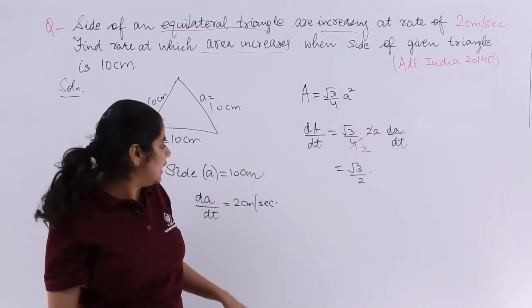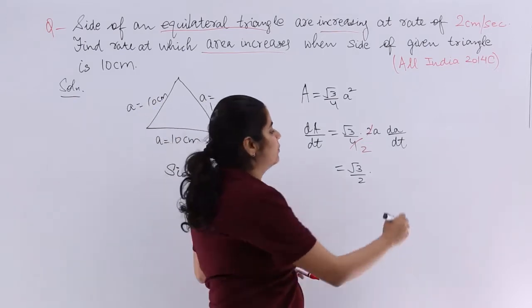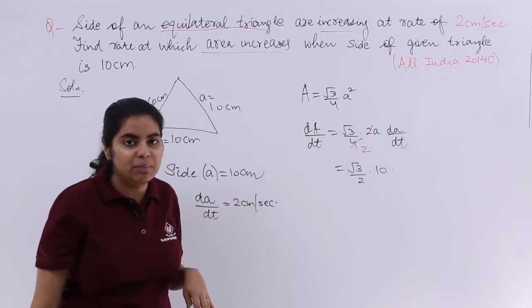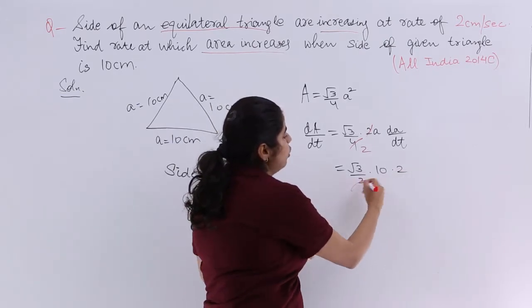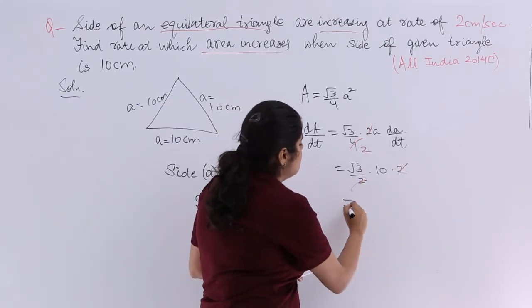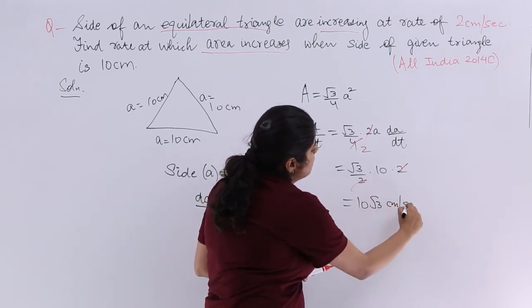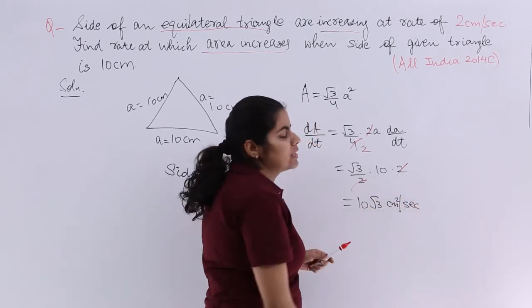Now what is a? a is the side that is 10 cm. Multiply da by dt. What is da by dt? 2 cm per second. So again cancelling what cancels? The answer is 10 under root 3 cm² per second.